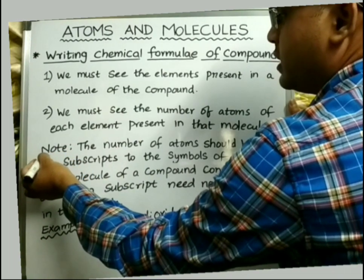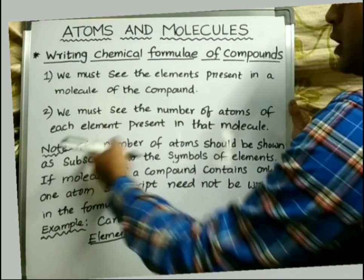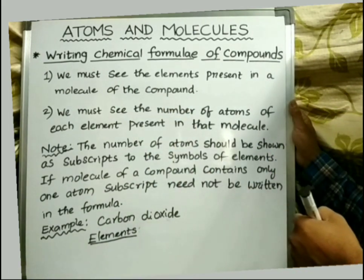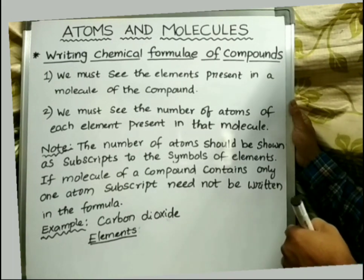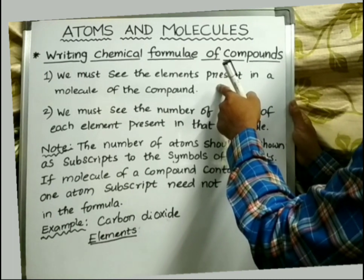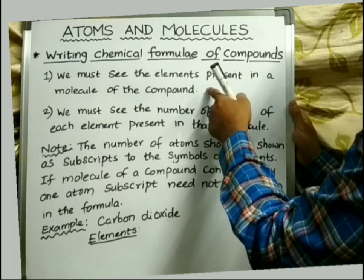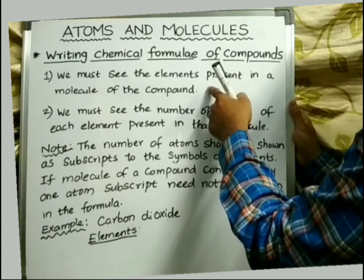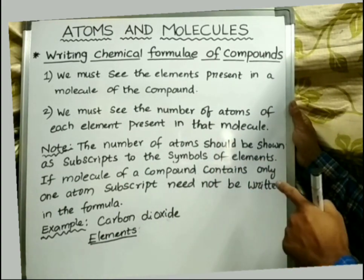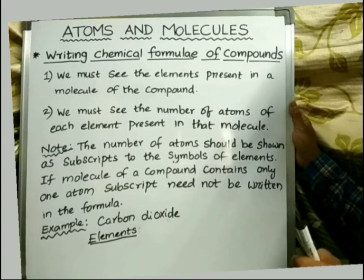While writing the chemical formula of a compound, the number of atoms should be shown as subscripts to the symbol of the elements. Whatever elements we identify as per the first rule, and whose symbols we write, at the bottom — that means as subscripts — we have to show the number of those atoms.